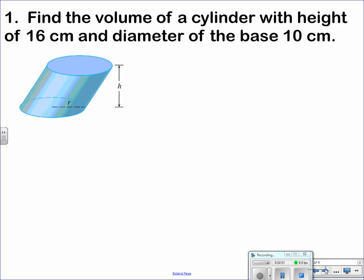So our first example. We have an oblique cylinder now. Find the volume of a cylinder where the height is 16, and the diameter of the base, so that whole distance is 10, so our radius is just 5. Well,